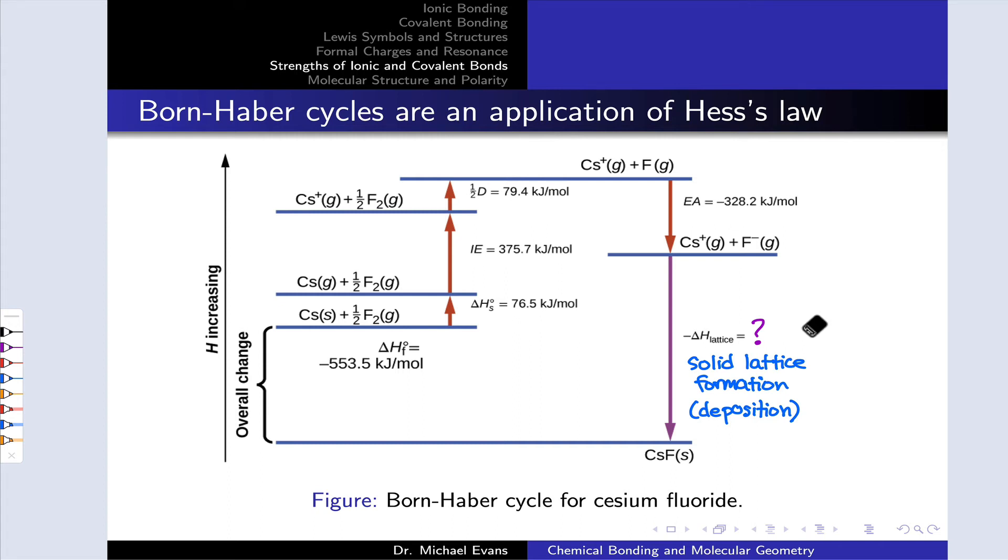So to see how this works, this general process is known as a Born-Haber cycle, going from the solid ionic compound up to the ions and then back down again. To see how this works, let's consider the question of determining the lattice energy of solid cesium fluoride, CsF. That is the negative of this exothermic enthalpy associated with going from the gaseous ions back down to the solid ionic lattice, which we might call deposition. And that overall process we can think of as involving going around the cycle like so.